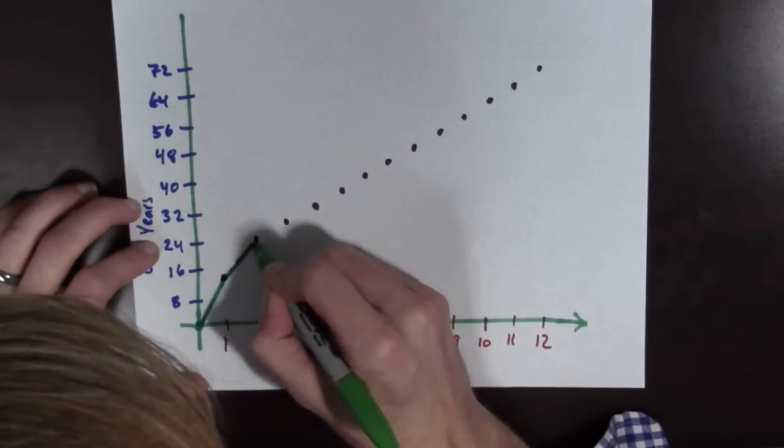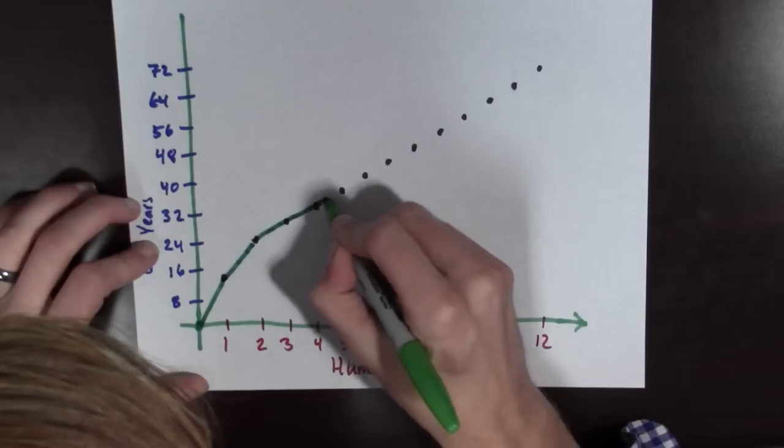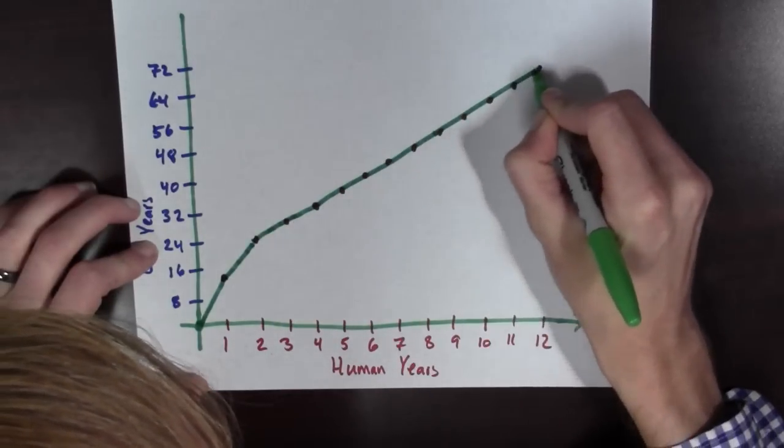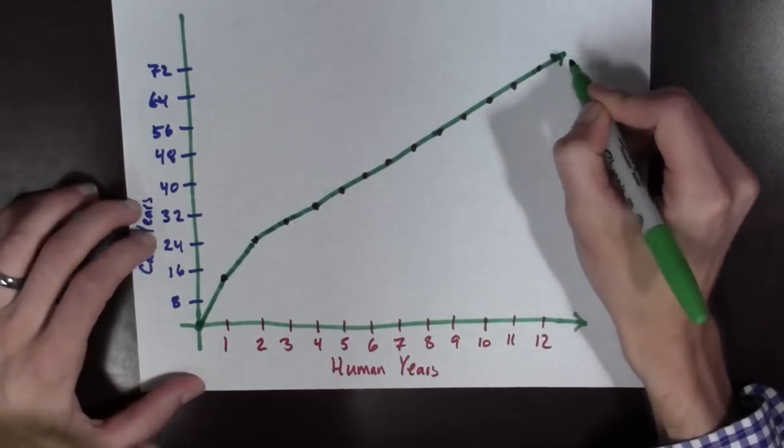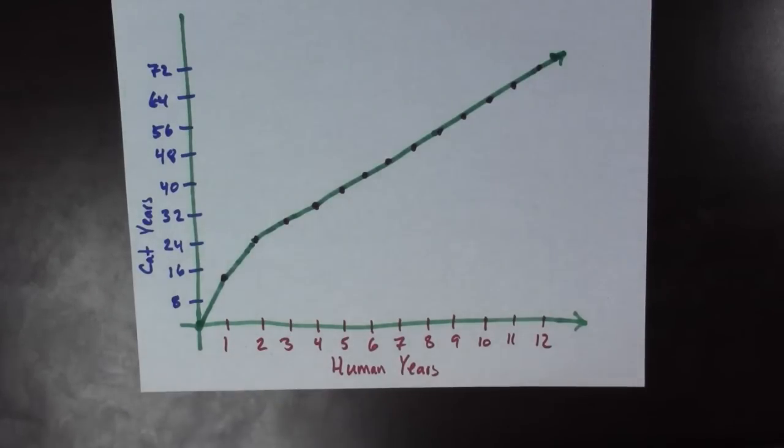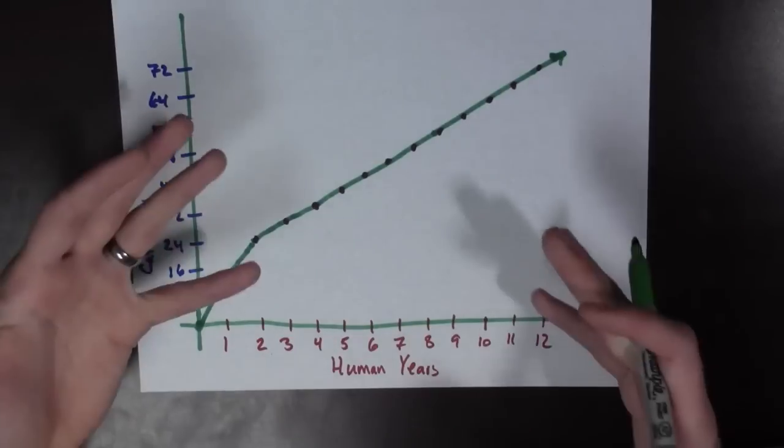Here I am, connecting the dots, looking good, looking good. Okay, now look at this. These are all basically in a straight line at this point. So, here we have a sort of a graph of the cat years to human years.